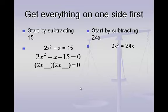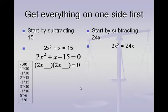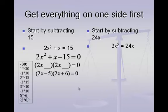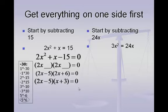Multiply your first and your last numbers together. 2 times negative 15 is negative 30. Make a list of things that multiply together to make negative 30. Pick the pair that adds up to positive 1 because positive 1 is our middle number. The pair that adds up to positive 1 is negative 5 and positive 6. So our factors would be 2x minus 5 and 2x plus 6. Don't forget to go back and reduce one of your factors. 2x plus 6 reduces — dividing each term by 2 gives x plus 3. So my factors are 2x minus 5 and x plus 3.